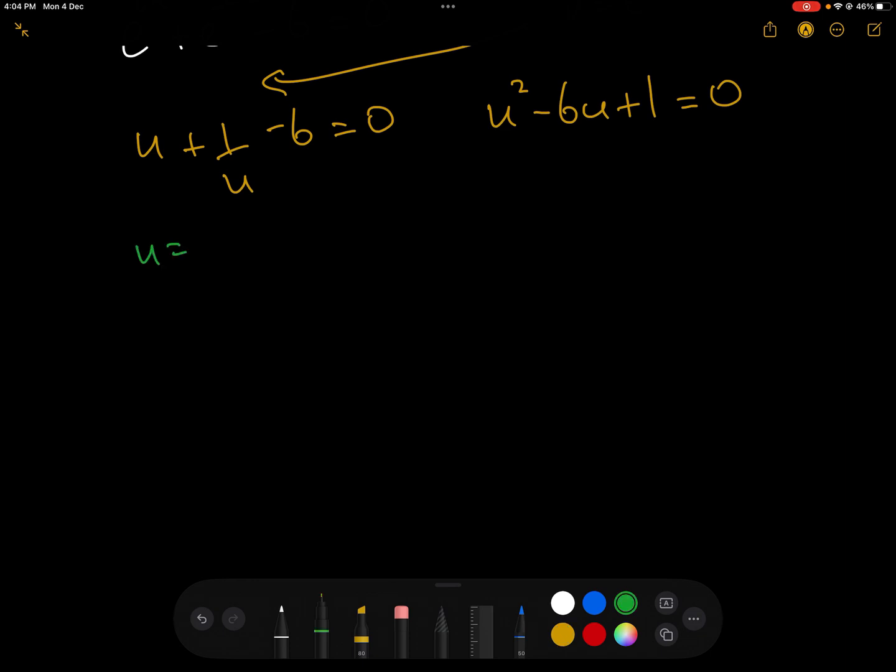So u therefore equals, using the quadratic formula, (-b ± √(b² - 4ac))/2, which equals (6 ± √32)/2,